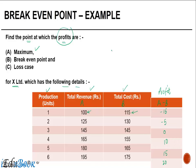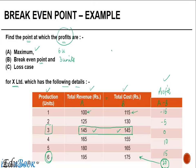The profits are maximum at 20 rupees when the number of units produced is 6. For the break even point, we didn't even need to calculate profits — at break even, total revenue equals total cost. Looking at the table, when the company produces 3 units, total revenue equals total cost, so that is the break even position. Maximum profits are earned at 6 units, and the company is in a loss at 1 and 2 units of production.